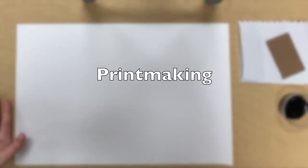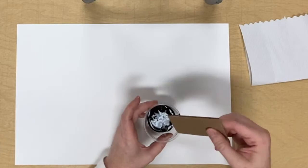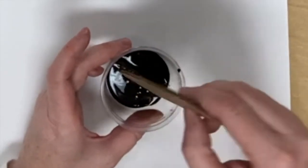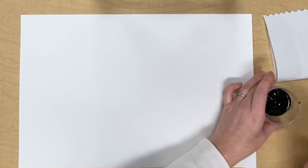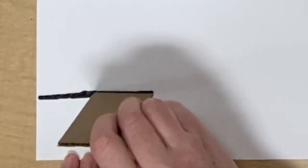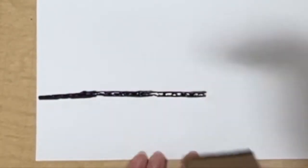Today we're going to be printmaking with cardboard. So we're going to pick up our piece of cardboard. You're going to dip the small end, the short end, into the paint. And then just press the edge of the cardboard onto your paper.